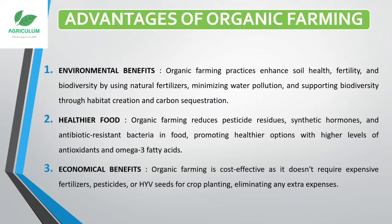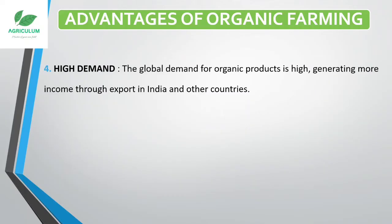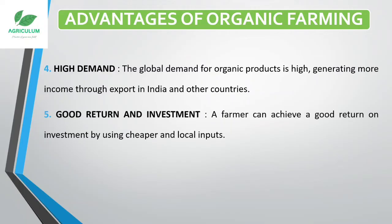The third advantage is economic benefits. We get economic benefits from organic farming because we don't have to use expensive fertilizers or pesticides. The fourth is high demand — the global demand for organic products is high, as people prefer natural and organic products, generating more income through exports in India and other countries. The fifth is good return on investment — a farmer can achieve a good return by using cheaper and local inputs in organic farming, like cow dung, soil, manure, and compost.